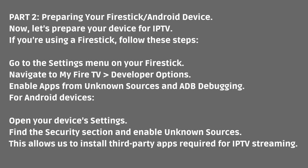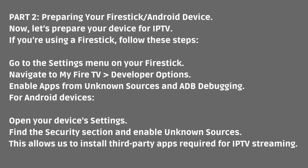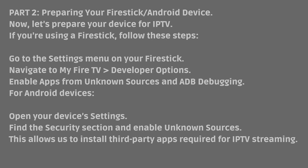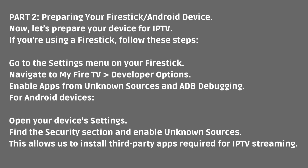Part 2: Preparing your Fire Stick or Android device. Let's prepare your device for IPTV. If you're using a Fire Stick, go to the Settings menu, then navigate to My Fire TV > Developer Options. Enable apps from unknown sources and ADB debugging. For Android devices, open your device's settings, find the security section, and enable unknown sources. This allows us to install third-party apps required for IPTV streaming.